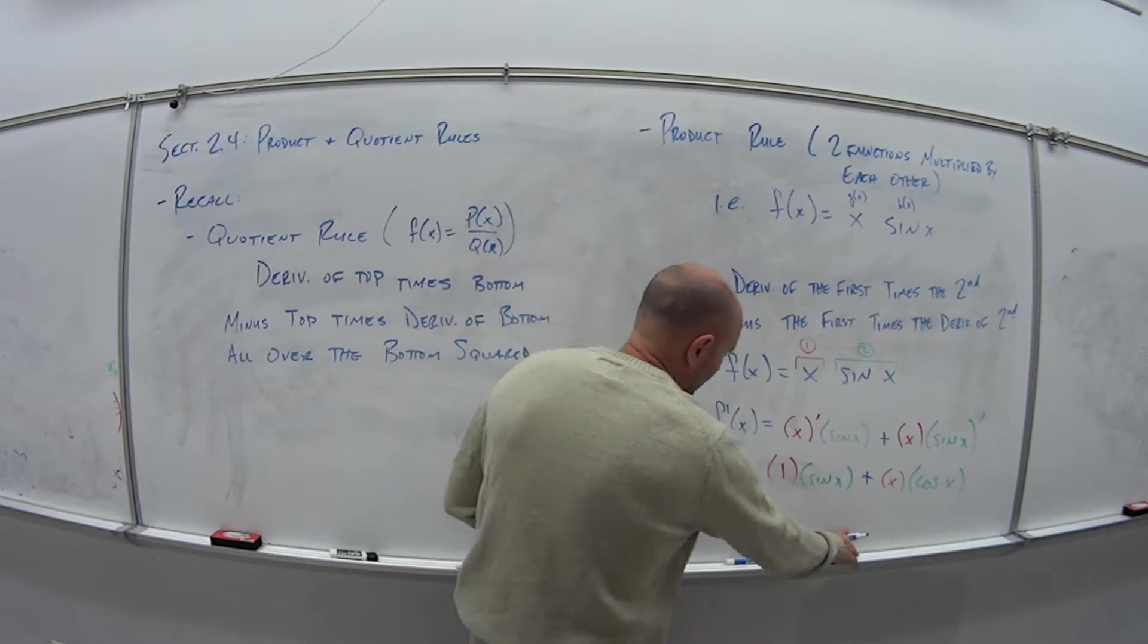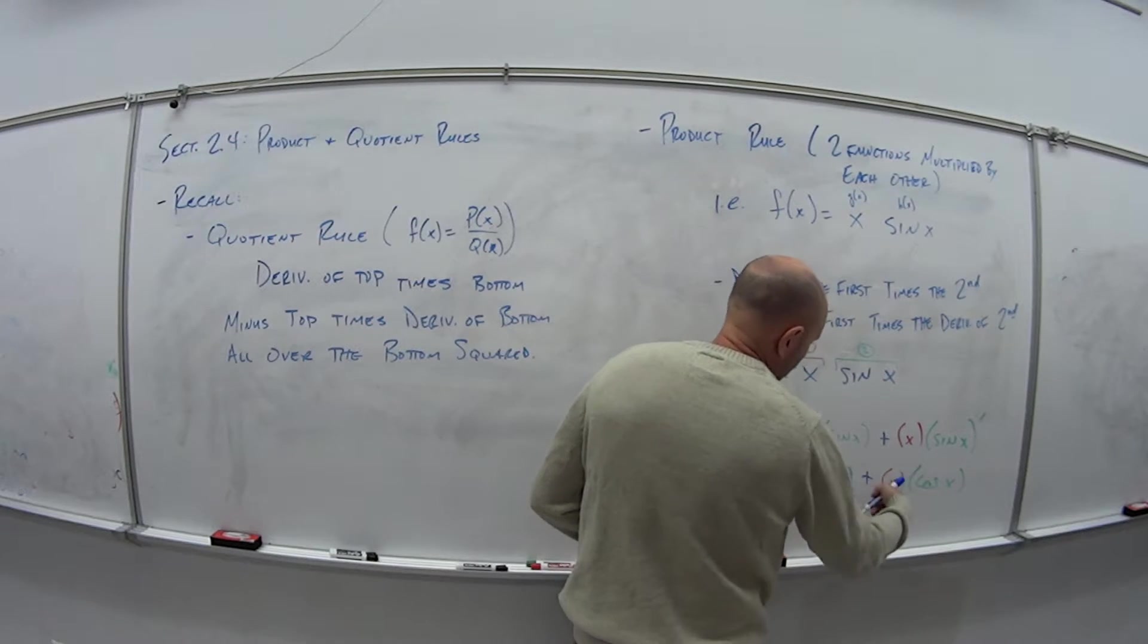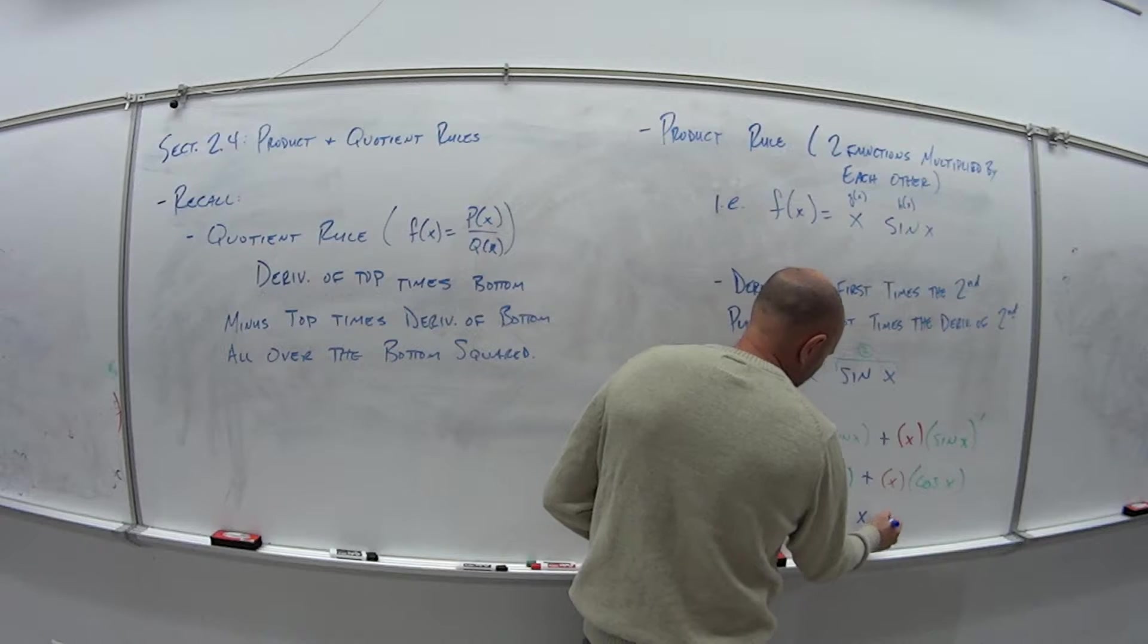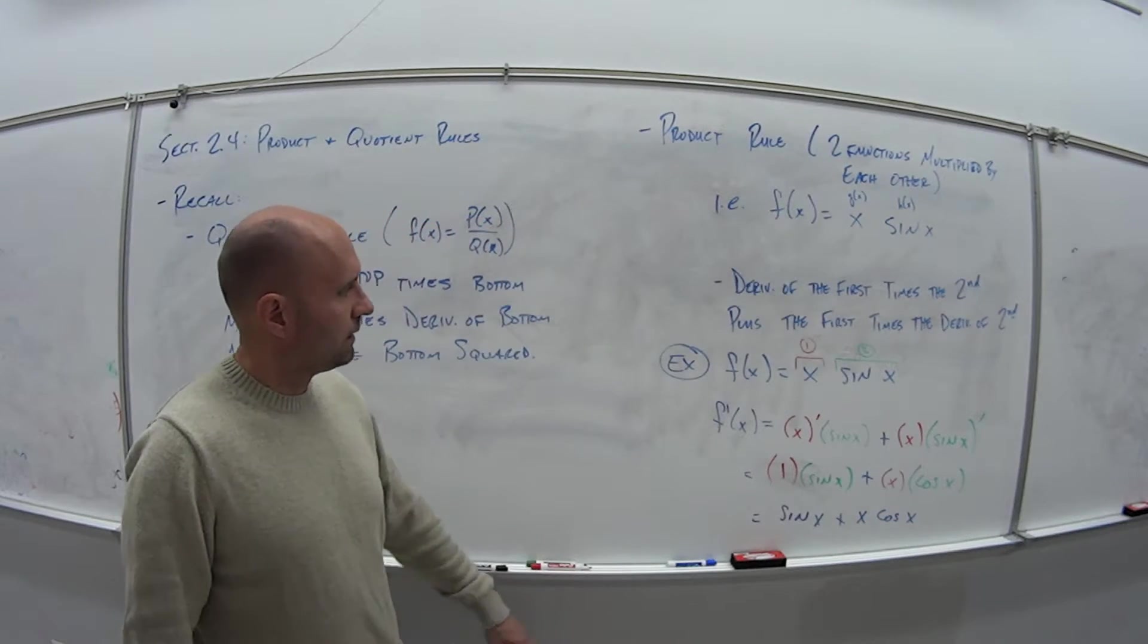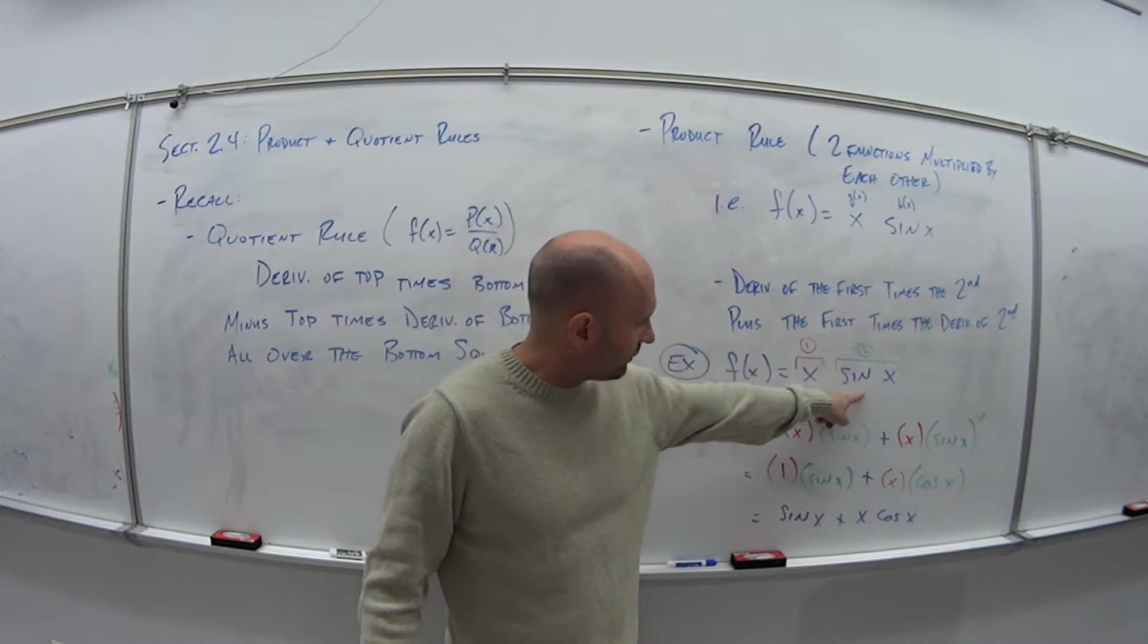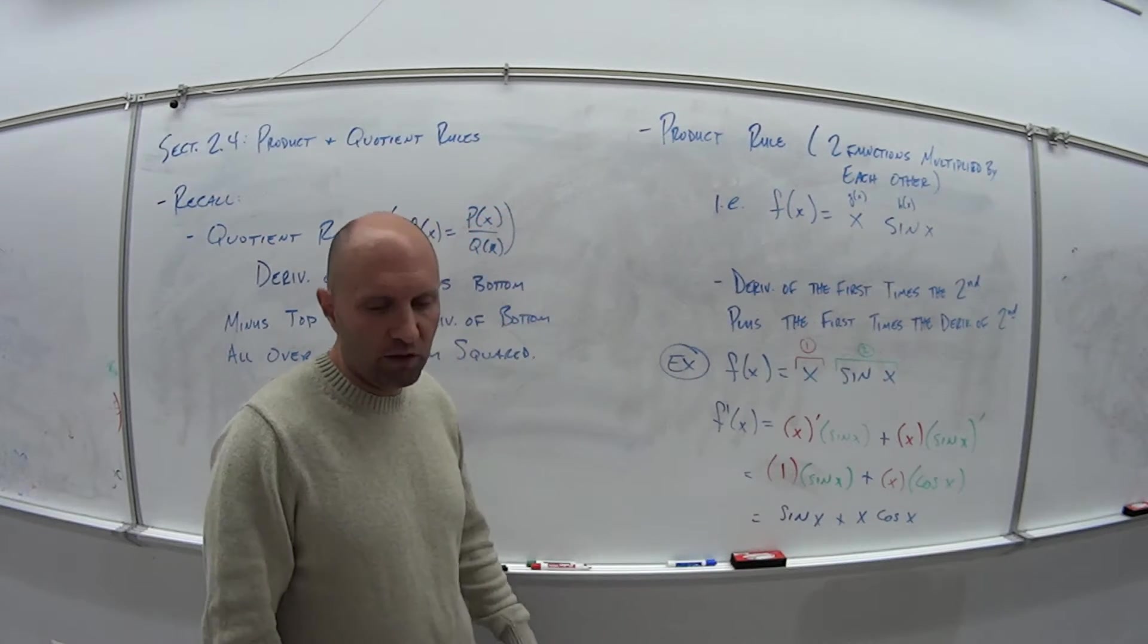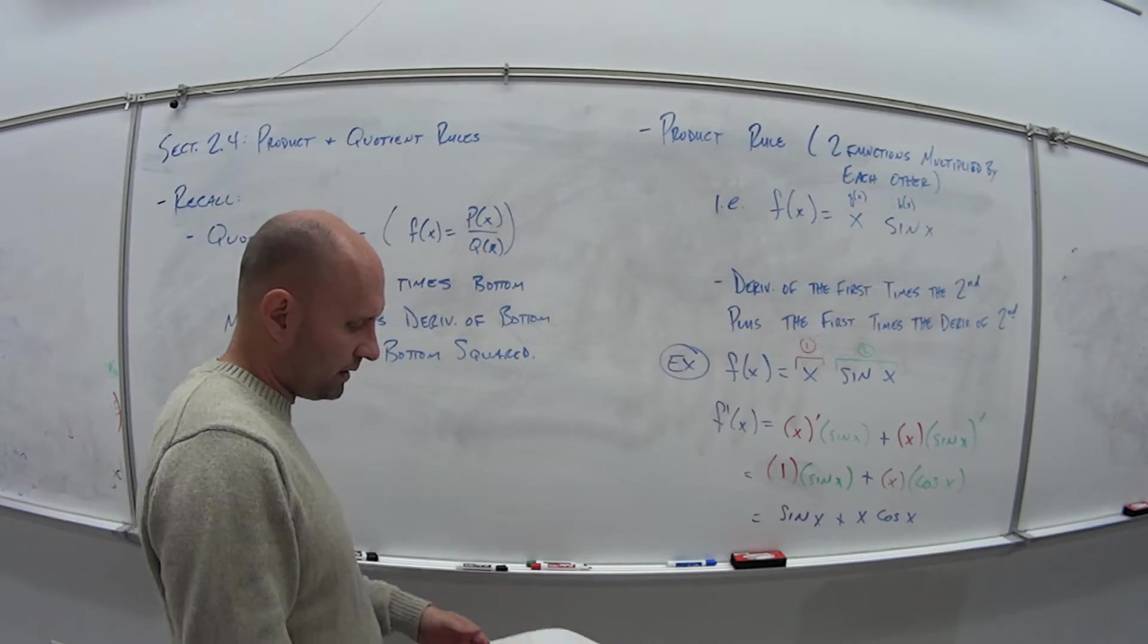So now if I simplify this, I just get sin(x) plus, and there's no minus signs to deal with here, so just plus x cos(x). So if I have the function x sin(x), and I want to take its derivative, it's the derivative of the first times the second, plus the first times the derivative of the second, which gives me sin(x) plus x cos(x).